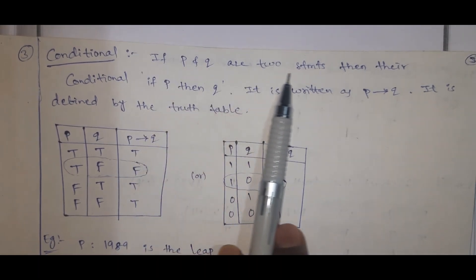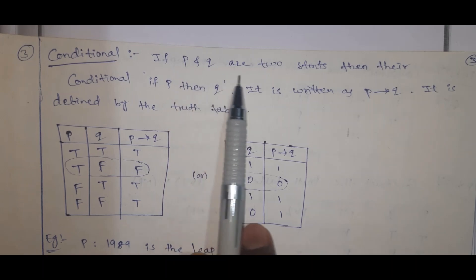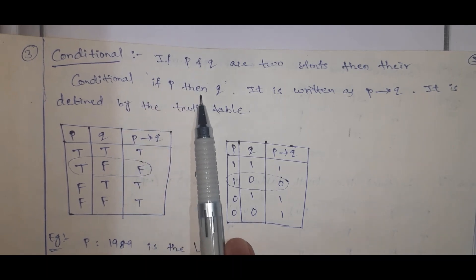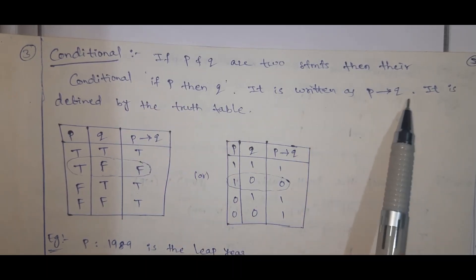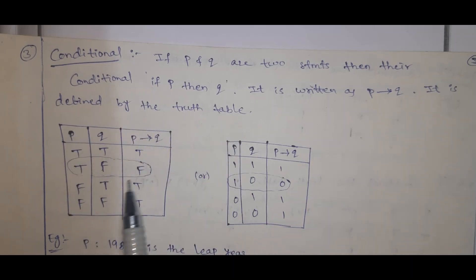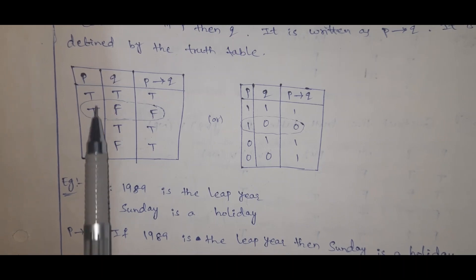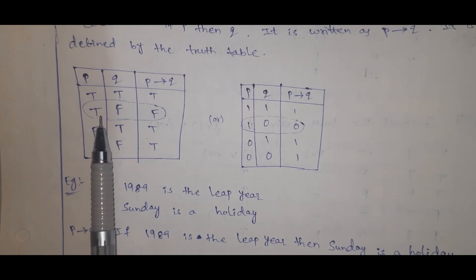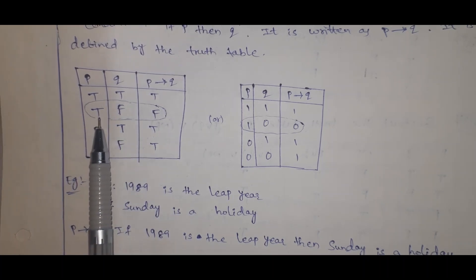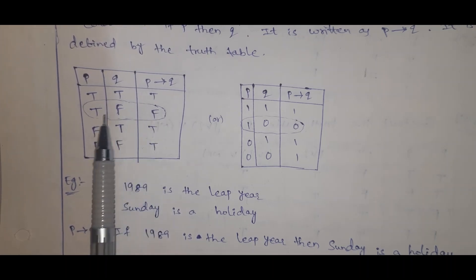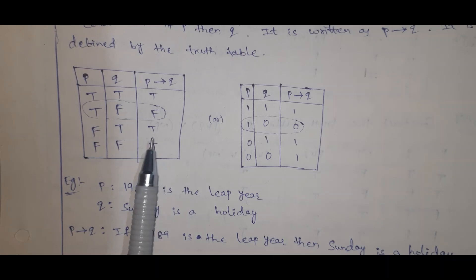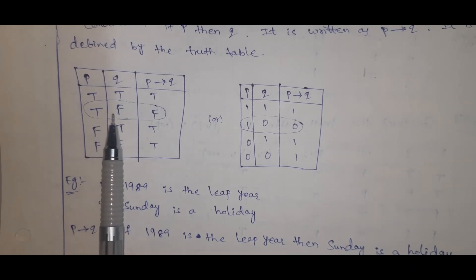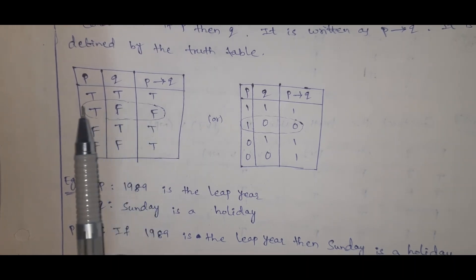Conditional: if P and Q are two statements, then the conditional is P implies Q (P→Q). It is defined by the truth table. The rows are T-T (true), T-F (false), F-T (true), F-F (true). So the conditional is false only when the first statement is true and the second is false; all remaining cases are true.